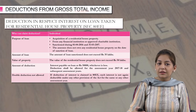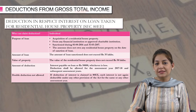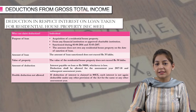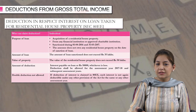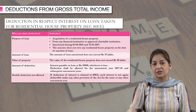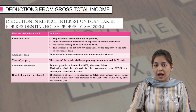Here the amount of loan should not exceed rupees 35 lakh — this is the maximum limit. And similarly, the value of property should not exceed 50 lakhs. So if your property is up to rupees 50 lakhs and the amount of loan is up to rupees 35 lakhs, this section becomes applicable.